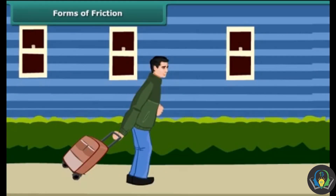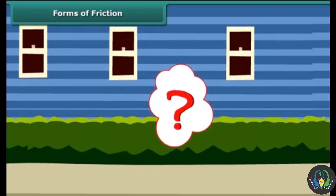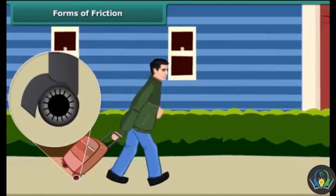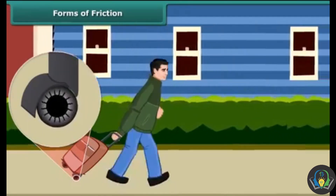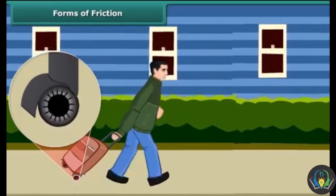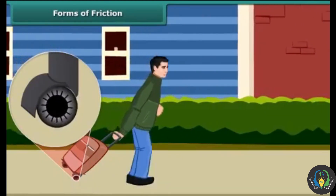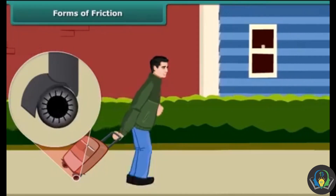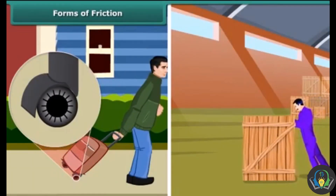You must have seen suitcases and other pieces of luggage fitted with rollers, which can be pulled by a child as well. The rollers reduce friction by allowing objects to roll. It is always easier to roll than to slide a body over another, and that is why it is convenient to pull luggage fitted with rollers. The force of friction between the rollers on a body and the surface is called rolling friction, which is much less than sliding friction.